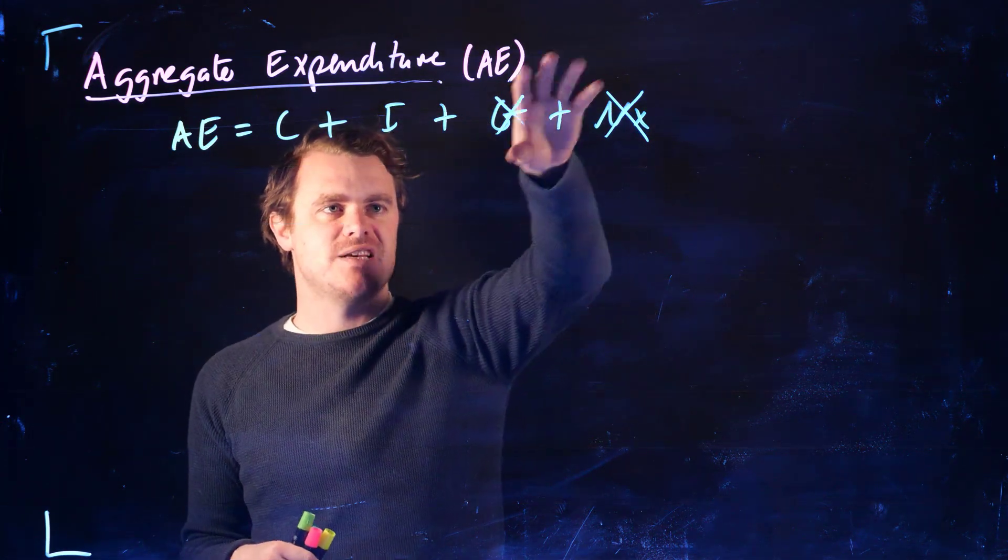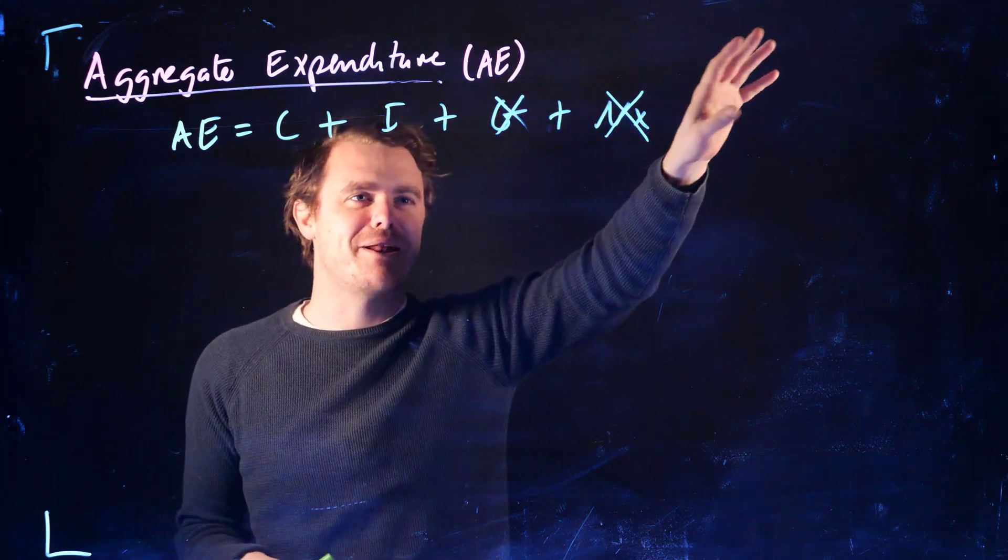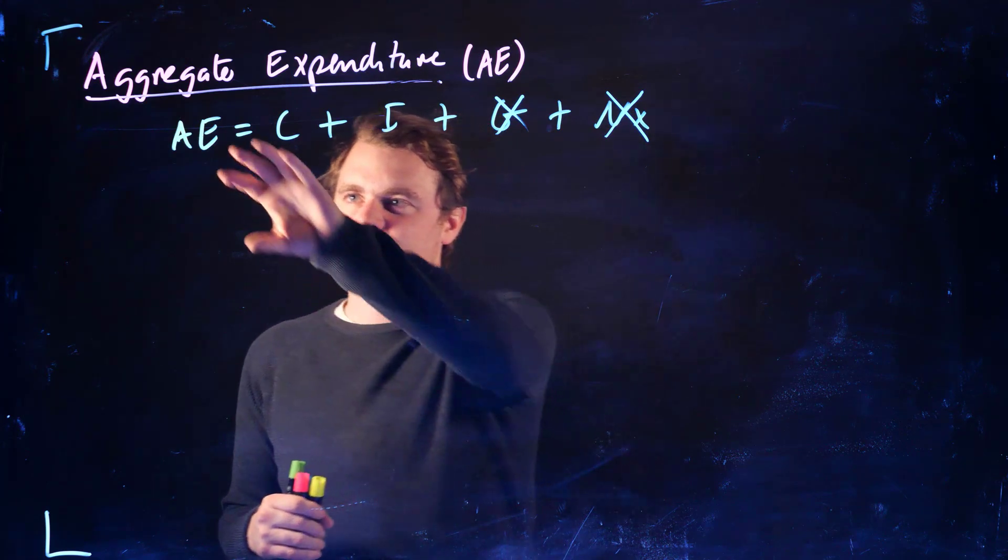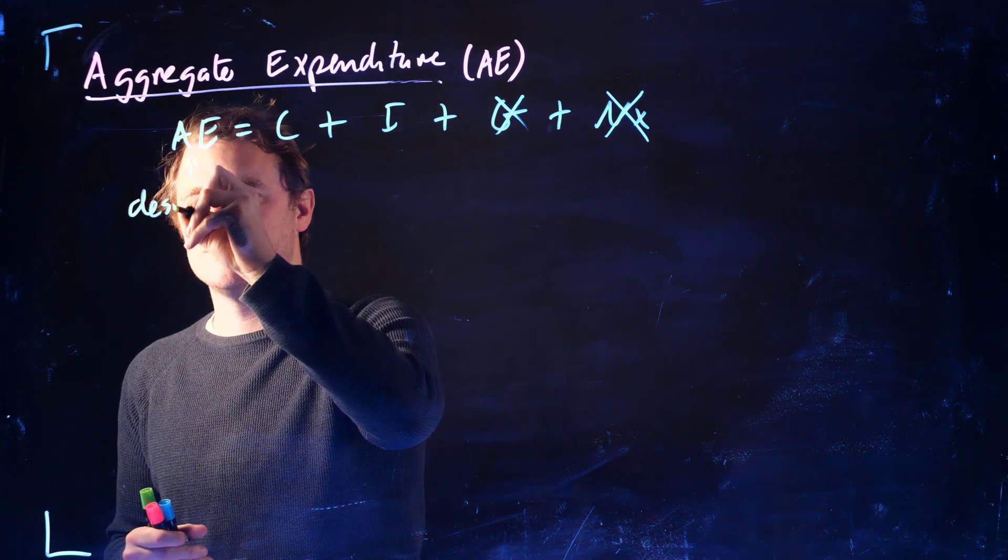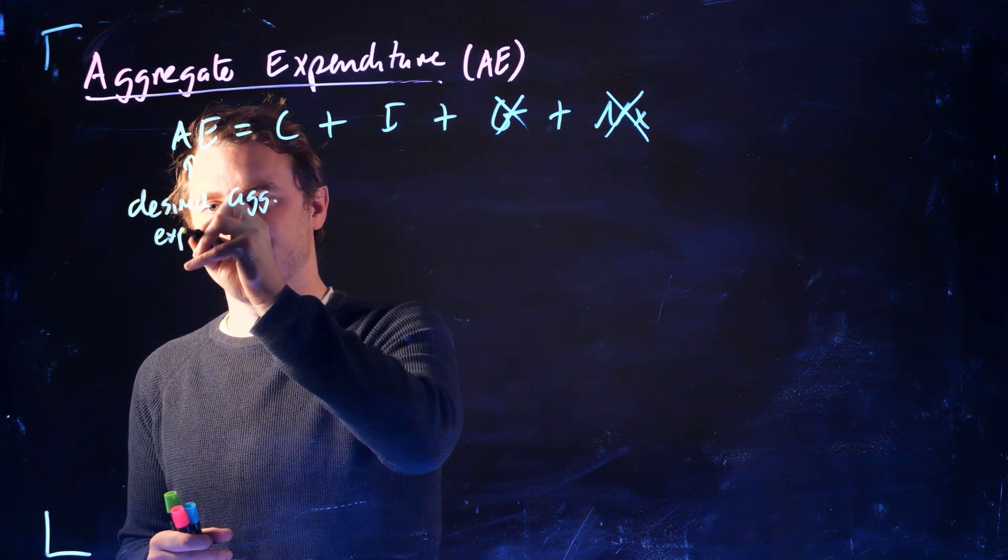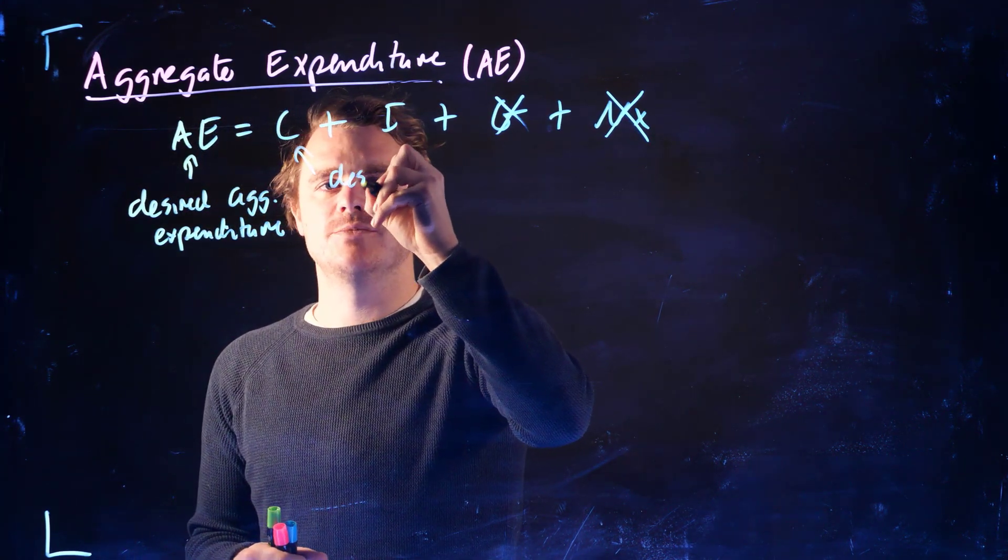Okay, so we've made some assumptions, which allowed us to get rid of the government, whatever your opinion on that is, as well as trade with other countries. And so now, again, this is desired aggregate expenditure. This is desired consumption.